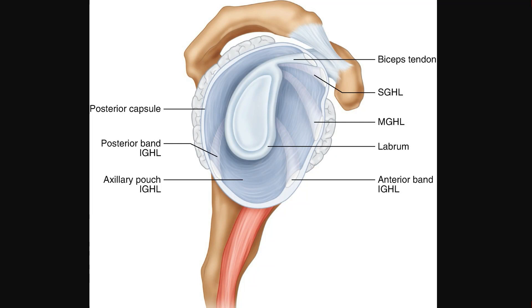Just a quick reminder regarding the anatomy. This is a sagittal view with the glenoid. We have the inferior glenohumeral ligament complex, which comprises an anterior band and a posterior band — the anterior one being the more important and thicker one. Then we have the axillary pouch, which is a thinner structure.